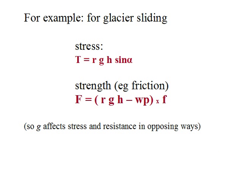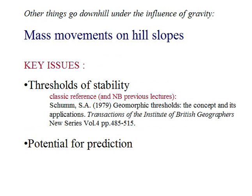In glacier sliding, for example, the driving stress controlled by weight and gradient opposes the basal friction, which is increased by glacier weight but can be decreased by basal water pressure.